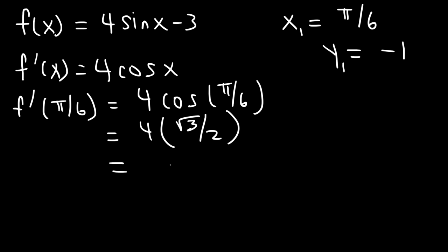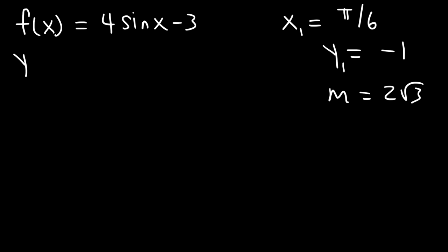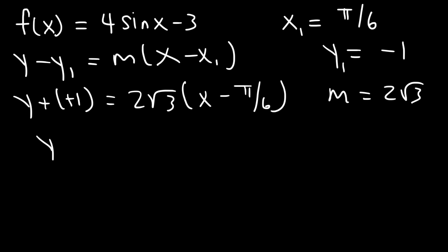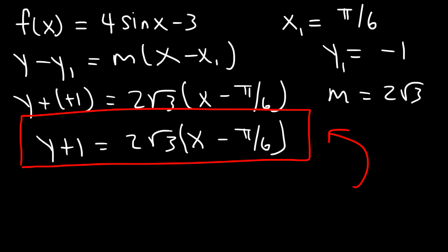Now let's go to the point slope formula. y1 is negative 1, m is 2 square root of 3, and x1 is pi over 6. y minus negative 1 is the same as y plus 1. So we have y plus 1 equals 2 square root of 3 times x minus pi over 6. I'm going to leave the answer in point slope form — you don't want to multiply 2 root 3 by pi over 6, it's not going to look nice. So that's the equation of the tangent line for this problem.